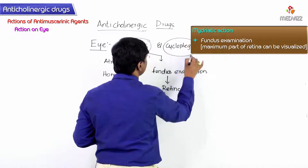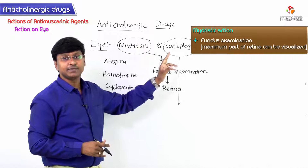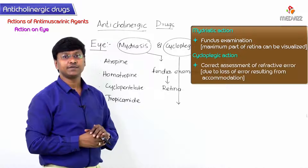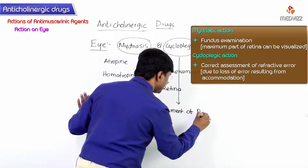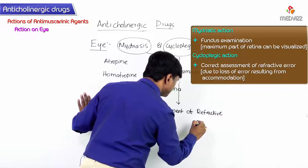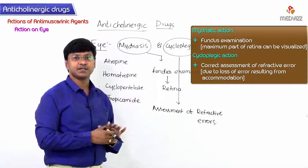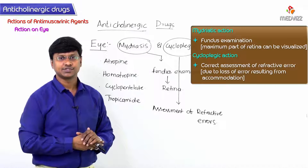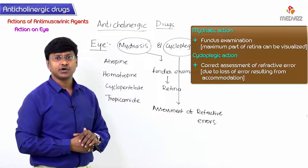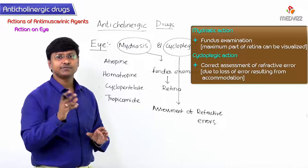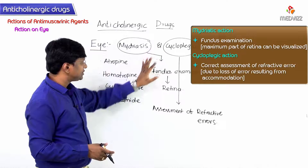The cycloplegic action is used for the correct assessment of refractive errors. Because accommodation can introduce errors in the assessment of refractive errors, the cycloplegic action of anticholinergic drugs is used to eliminate this error and allow accurate measurement.